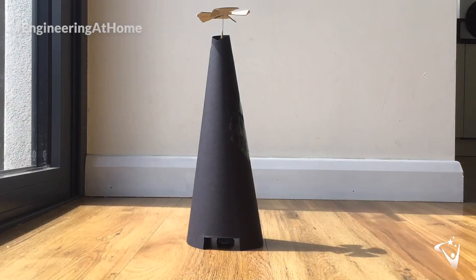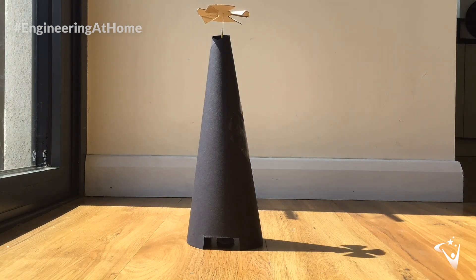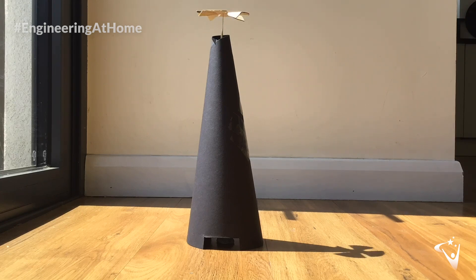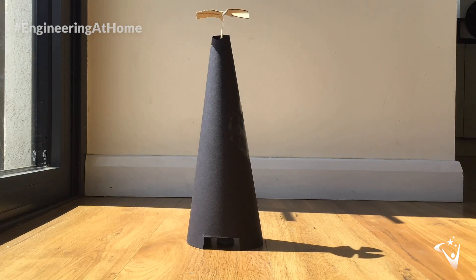So this is a time lapse and it's very sped up, but what we can see happening is when the sun is shining on the solar tower the propeller at the top starts moving. This is because the energy from the sun is heating up the air inside the black card due to the greenhouse effect. The hot air then rises due to convection which causes the propeller at the top to move. If you'd like to learn more about these concepts there'll be links on the written instructions to take you to informative videos about them.